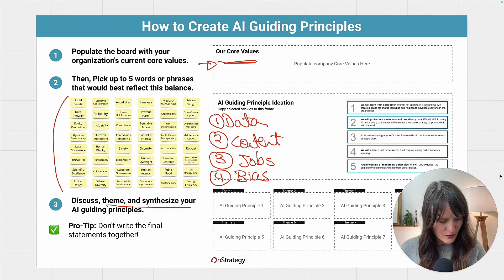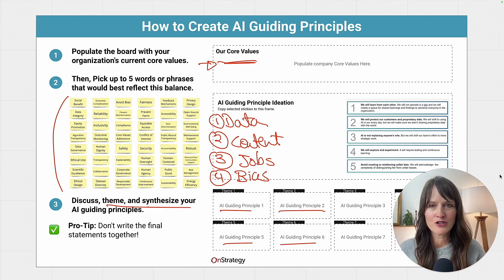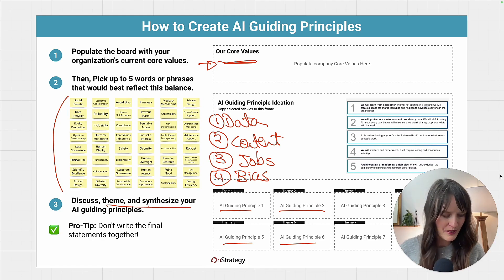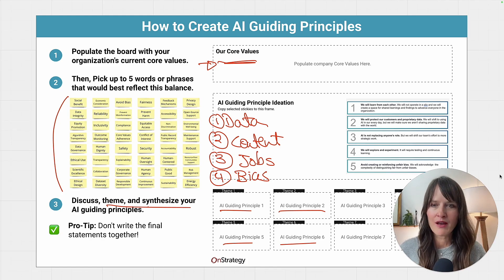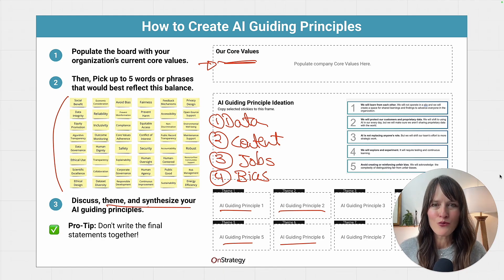Once you have those, you're going to want to build them out in detail. So that's just ideating what they might be and then actually developing them. You don't need to wordsmith together, of course, but the intention of what you want them to be should be done together.